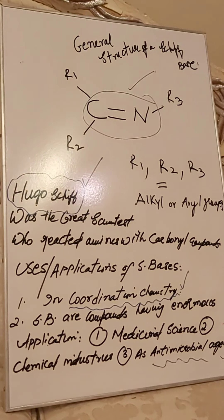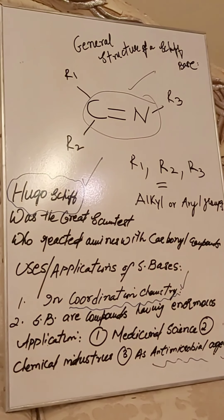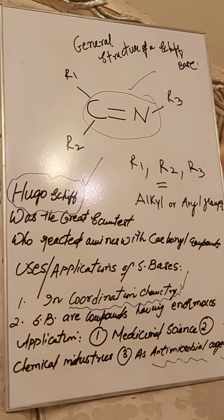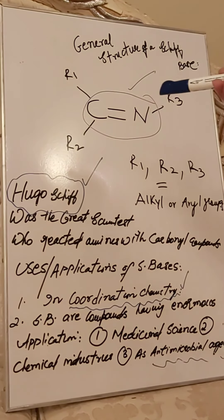In the FTIR spectrum of a Schiff base, a specific sharp peak appears around 1520 to 1620 cm⁻¹ indicating the presence of the Schiff base. The carbonyl group C=O is replaced by the azomethine group C=N during condensation. For FTIR analysis, you place a small dry portion of your compound in the instrument, and it records all functional groups present and gives you specific peaks to confirm your compound.